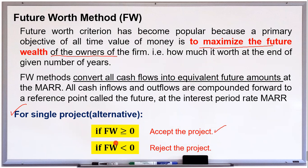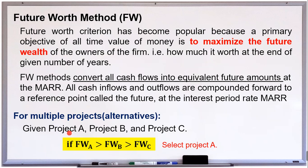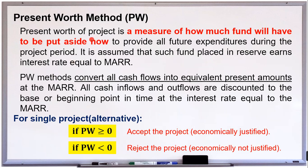If the future worth is less than zero, we reject the project. For multiple projects given A, B, and C, we select the one with the largest future worth value. For the present worth method, we use it because it measures how much fund will have to be put aside now. We convert all cash flows into equivalent present amounts at a given MARR. For a single project, if the present worth is greater than or equal to zero, we accept the project — meaning it is economically justified — otherwise we reject it.